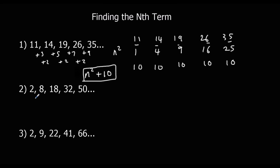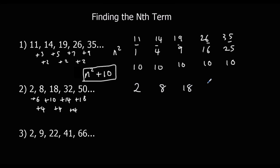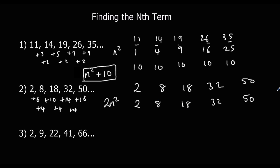Second practice question: the first differences go plus six, plus ten, plus fourteen, plus eighteen, so the second difference is four. That means it's a two n squared question. Writing out two n squared: two, eight, eighteen, thirty-two, fifty. Taking that away from the actual sequence leaves nothing. So the answer is just two n squared.